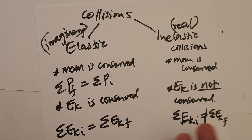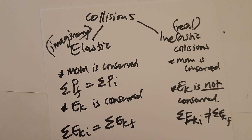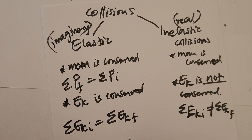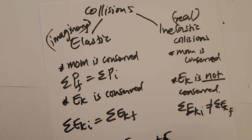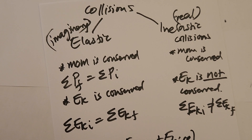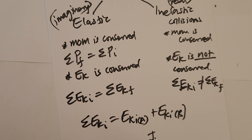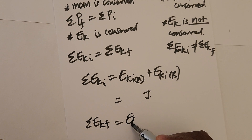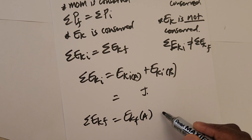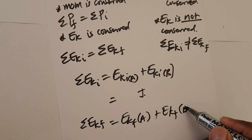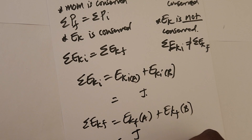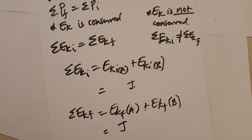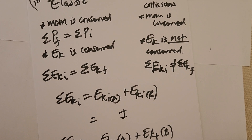To prove whether a collision is elastic or inelastic, use kinetic energy. Look at the two objects before the collision and find the total kinetic energy: KE_A(initial) plus KE_B(initial). Find the answer in joules. Then find the total kinetic energy after: KE_A(final) plus KE_B(final). Compare the two values. If they are equal, the collision is elastic. If they are not equal, the collision is inelastic.